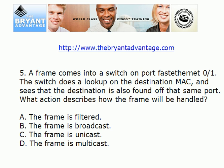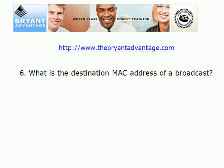Let's say a frame comes into a switch on port FastEthernet 0/1. The switch does a lookup on the destination MAC address of the frame and sees that the destination is found off the same port as the source. Which of these actions describes how that frame is going to be handled? Is it going to be filtered, broadcast, unicast, or multicast? And what is the destination MAC address of a broadcast? You've got to know that one.